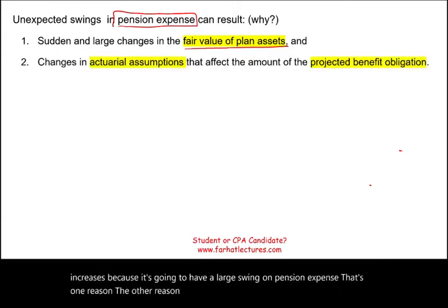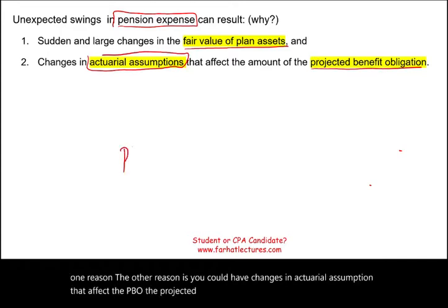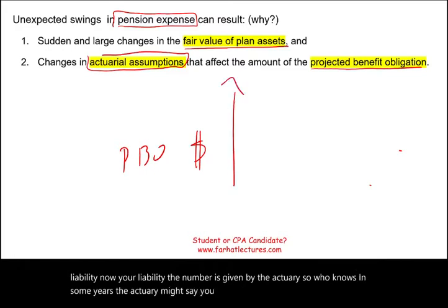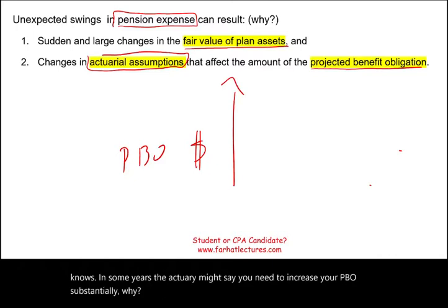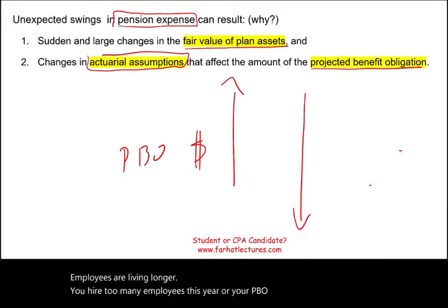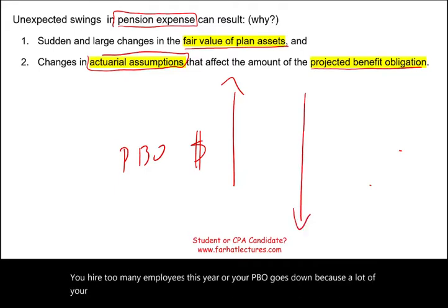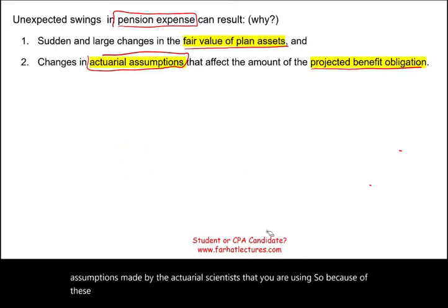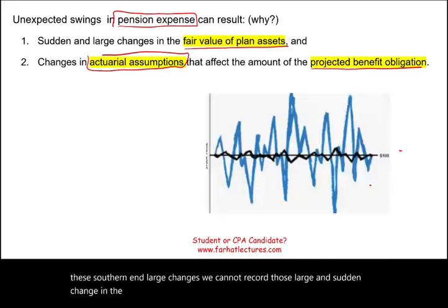The other reason is changes in actuarial assumptions that affect the PBO — the projected benefit obligation. The PBO is your liability, and that number is given by the actuary. In some years the actuary might say you need to increase your PBO substantially, because employees are living longer, or you hired too many employees, or your PBO goes down because employees left. Because of these sudden and large changes, we cannot record them directly in pension expense.